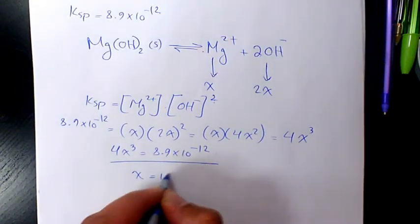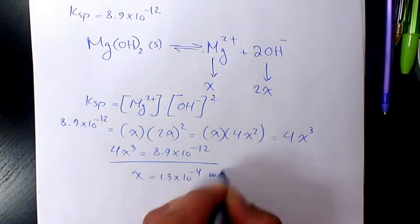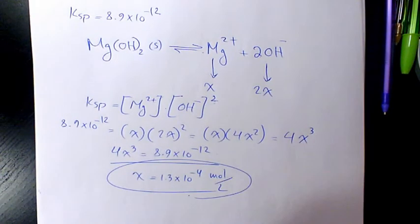will be 1.3 times 10 to the power of negative 4 mol per liter. That's going to be the molar solubility of magnesium hydroxide.